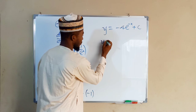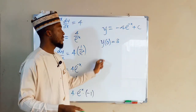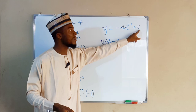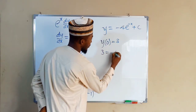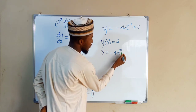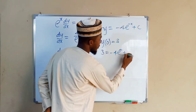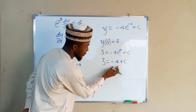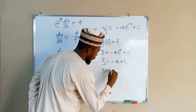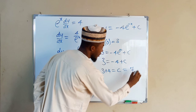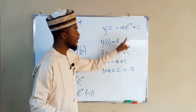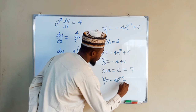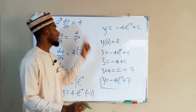Suppose we are given the condition y(0) equals 3. Substituting y equals 3 and x equals 0 into the equation, we have 3 equals negative four times e to the zero plus c. Since e to the zero is 1, this gives 3 equals negative four plus c. Bringing negative four to the other side gives c equals 3 plus 4, which is 7. Substituting c equals 7 back, the particular solution is y equals negative four e to the negative x plus 7.